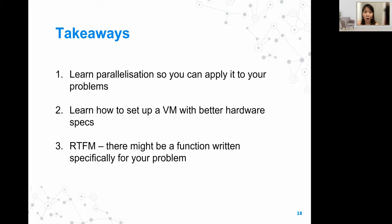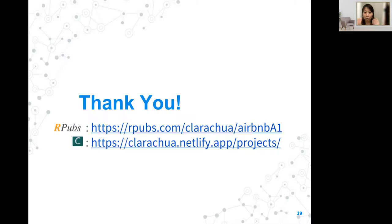The main takeaways are: one, learn parallelization so you can apply it to your problems and make computation a lot faster. Two, learn how to set up a VM with better hardware specs, which is what I had to do for the geographically weighted regression part of my project. And three, RTFM — there might actually be a function written specifically for your problem, and you won't know until you've looked. You can find the code on R Pubs or the project page, where I've put the data wrangling and all other parts of the project. Thank you.